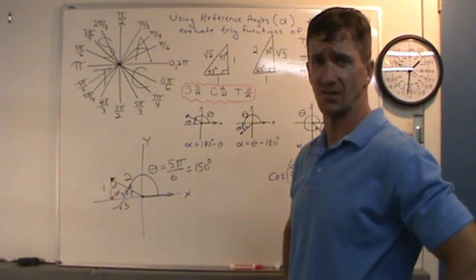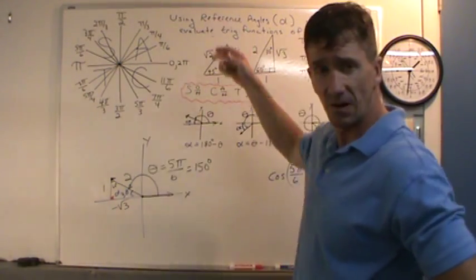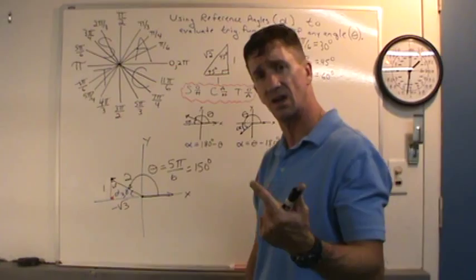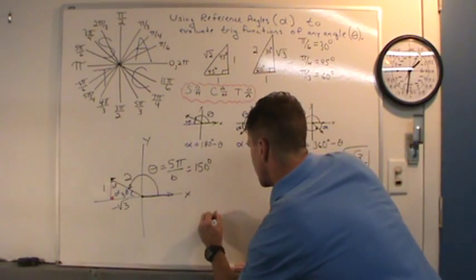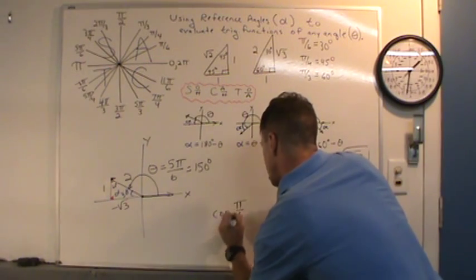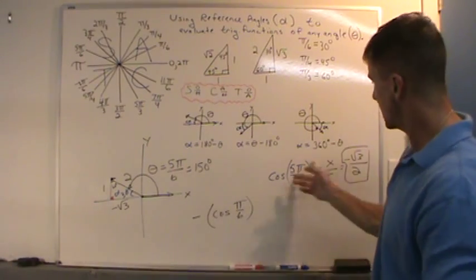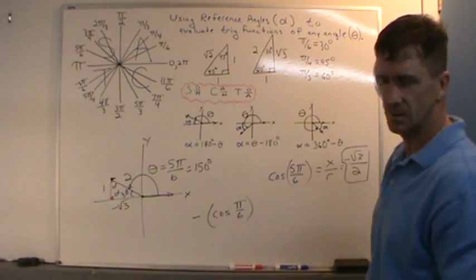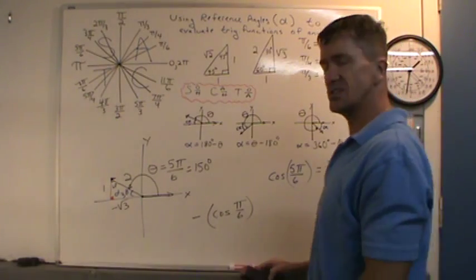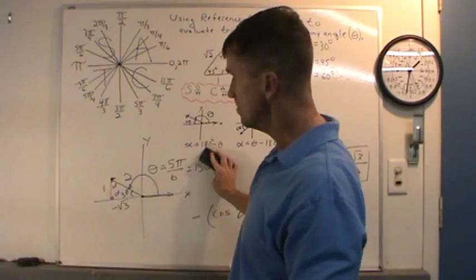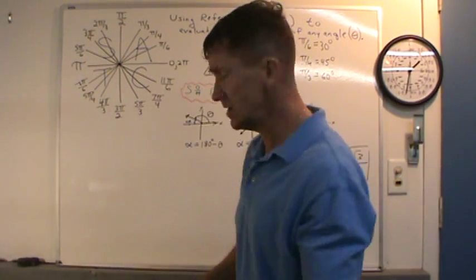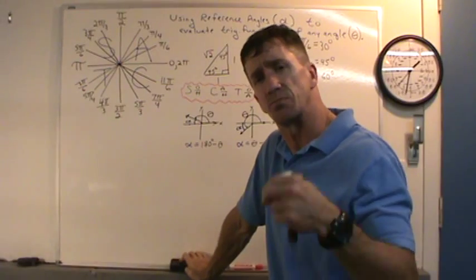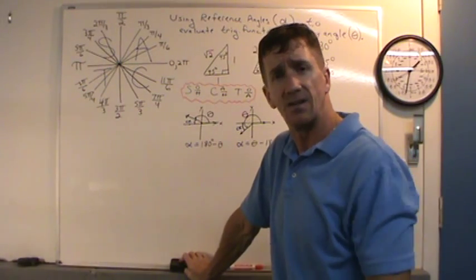That was a lot, so let's talk about quicker ways to evaluate these using the reference angle — without even making a sketch. Notice that the answer was the same as cosine of π/6, just negative. The key is a two-step method. Step one: find the reference angle and evaluate the trig function of it. Step two: determine what quadrant the angle is in, then use ASTC to decide whether to prefix the result with a positive or negative sign.